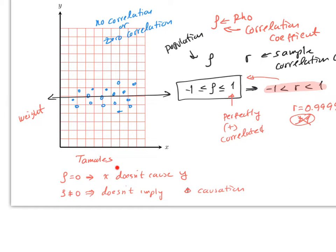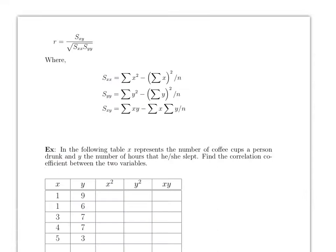To repeat: if the correlation is zero you can say x doesn't cause y. But if the correlation is not zero, that does not imply causation. It just means there is a relationship between x and y, not that one is causing the other.